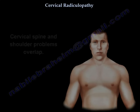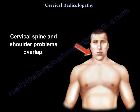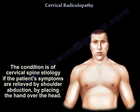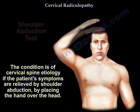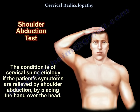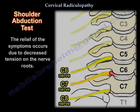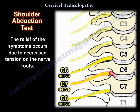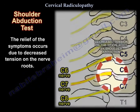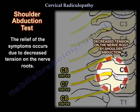The cervical spine and shoulder problems overlap. You know that the condition is of cervical etiology if relief of the pain occurs with shoulder abduction by placing the hand over the head. The relief of symptoms occurs due to decreased tension on the nerve roots.